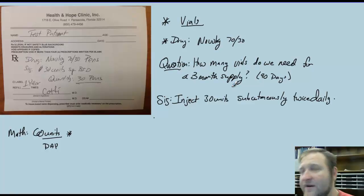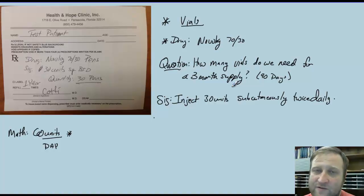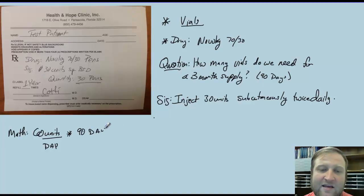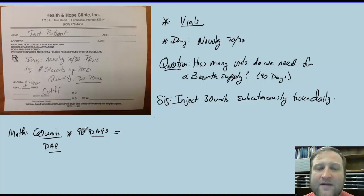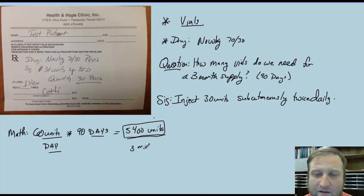We're dosing this for a three-month supply, which is 90 days. A pharmacy month is exactly 30 days, so the three-month supply equals 90 days. We multiply 60 units per day times 90 days: 9 times 6 is 54, add two zeros — so we know we're going to use 5,400 units for the entire three-month period.